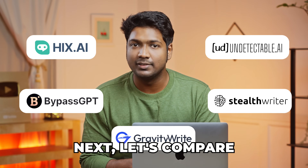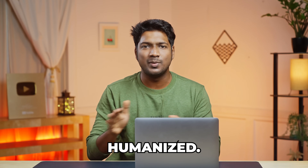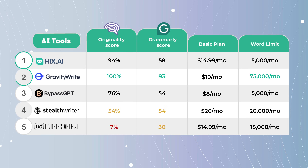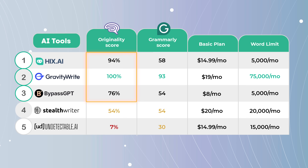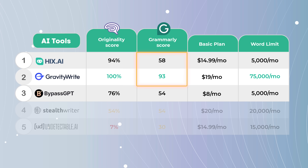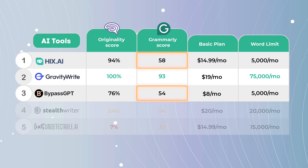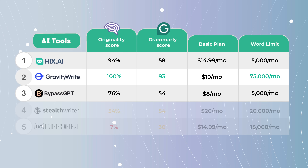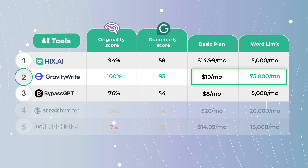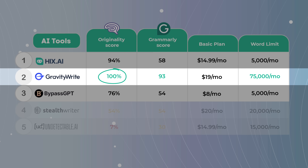Now that we're done testing all five AI tools, let's compare all the results and see which AI tool works the best. When we look at the scores, Hicks.ai, GravityWrite and BypassGPT have scored the highest for originality of content, meaning these three tools are excellent for rewriting AI content to make it undetectable. But in terms of quality of content, only GravityWrite has scored the highest while Hicks.ai and BypassGPT have average scores. When we look at the pricing plans and word limits, GravityWrite provides the best value with 75,000 words for just $19 per month, giving 100% unique content and a quality score of 93.